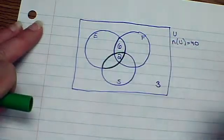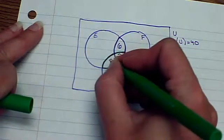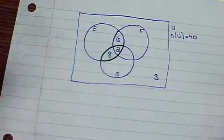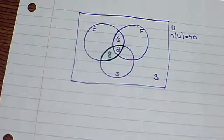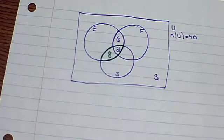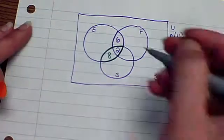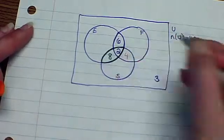If there's ten total there, then that means there's eight out here. Six study French and Spanish. Well, there's already two here, so there's got to be four there.